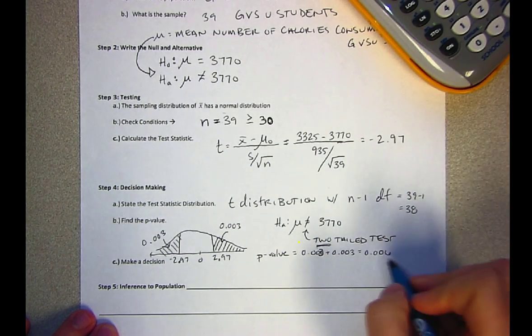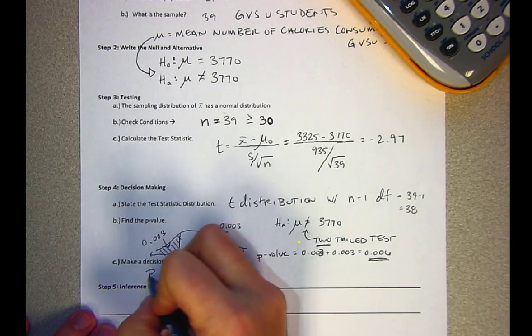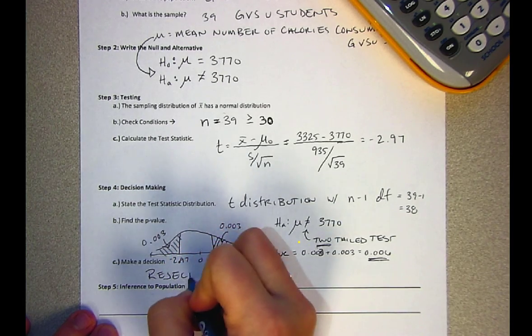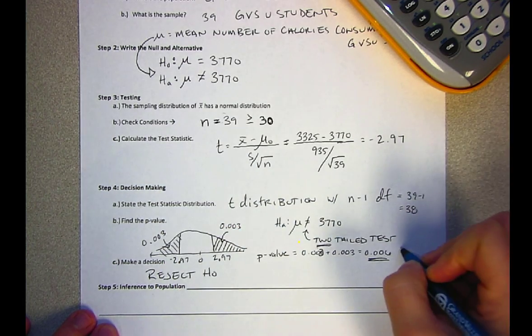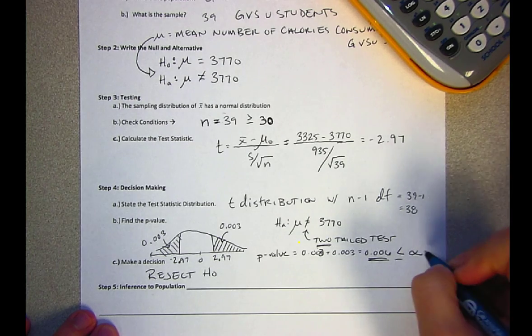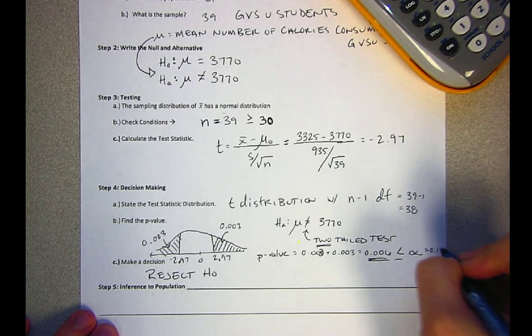Because that p-value is so small I'm going to reject the null. Remember because that's less than or equal to alpha where alpha equals 0.1, I'm going to reject.